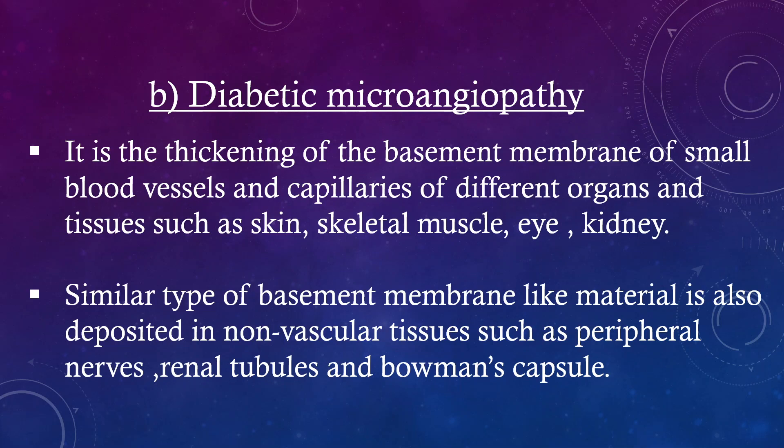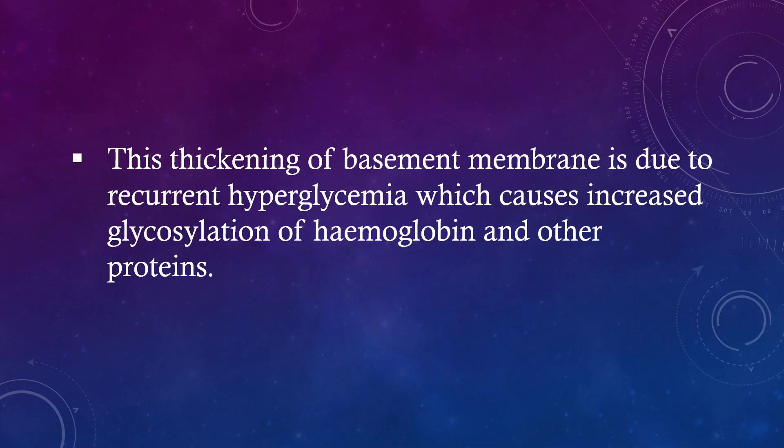A similar type of basement membrane-like material is also deposited in non-vascular tissues such as peripheral nerves, renal tubules, and Bowman's capsule. This thickening of the basement membrane is due to recurrent hyperglycemia, which causes increased glycosylation of hemoglobin and other proteins.